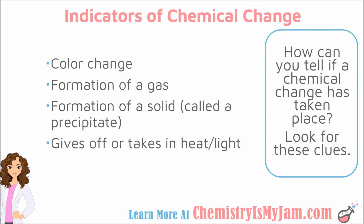It's handy to be able to recognize when a chemical change has taken place. Some clues to look for: color change, formation of a gas, formation of a solid — meaning you poured two liquids together and a solid formed, which would be called a precipitate — or if something gives off or takes in heat or light. These are things you can look for in the lab to help determine whether or not a chemical change has taken place.